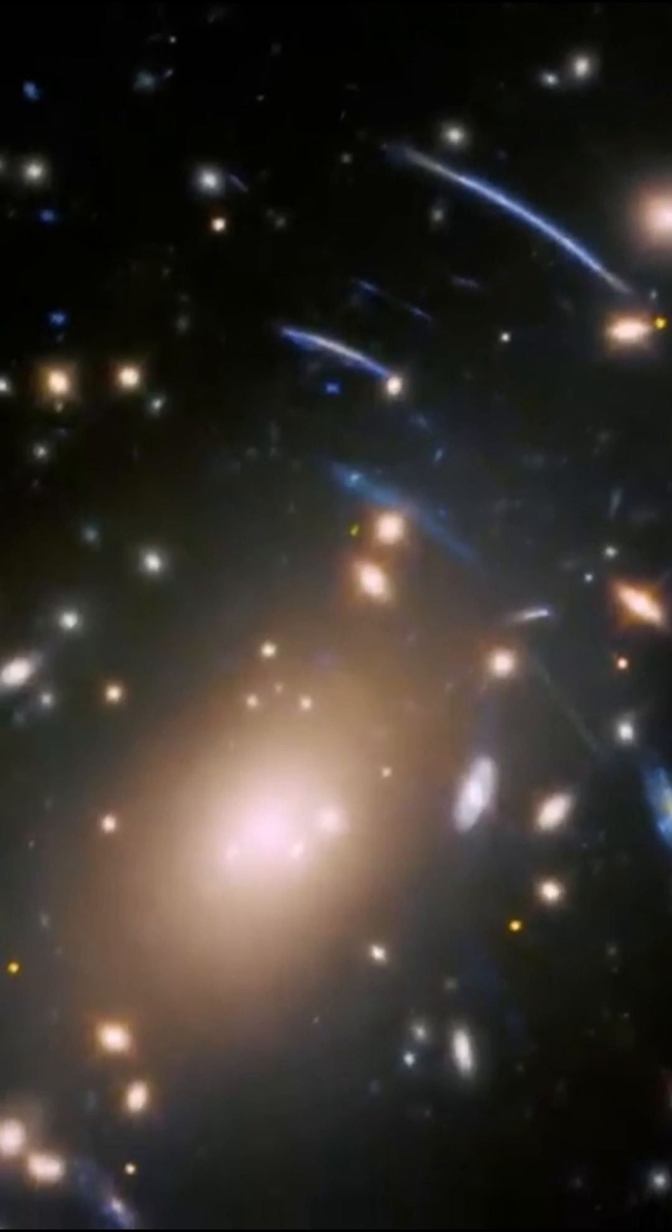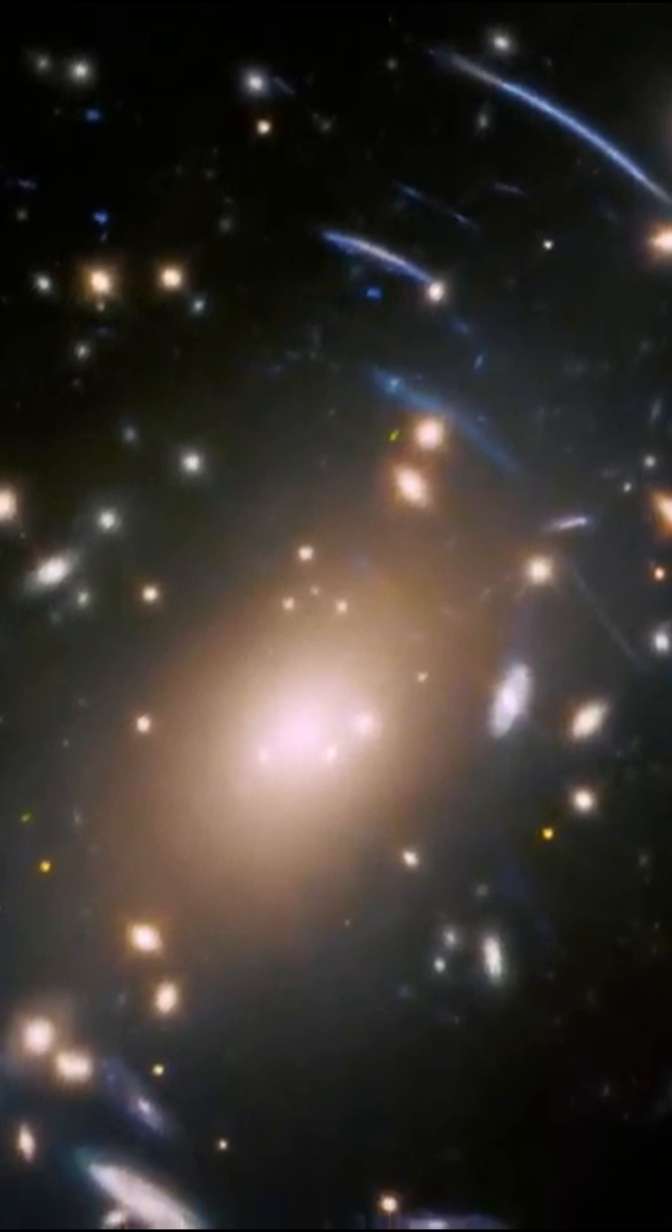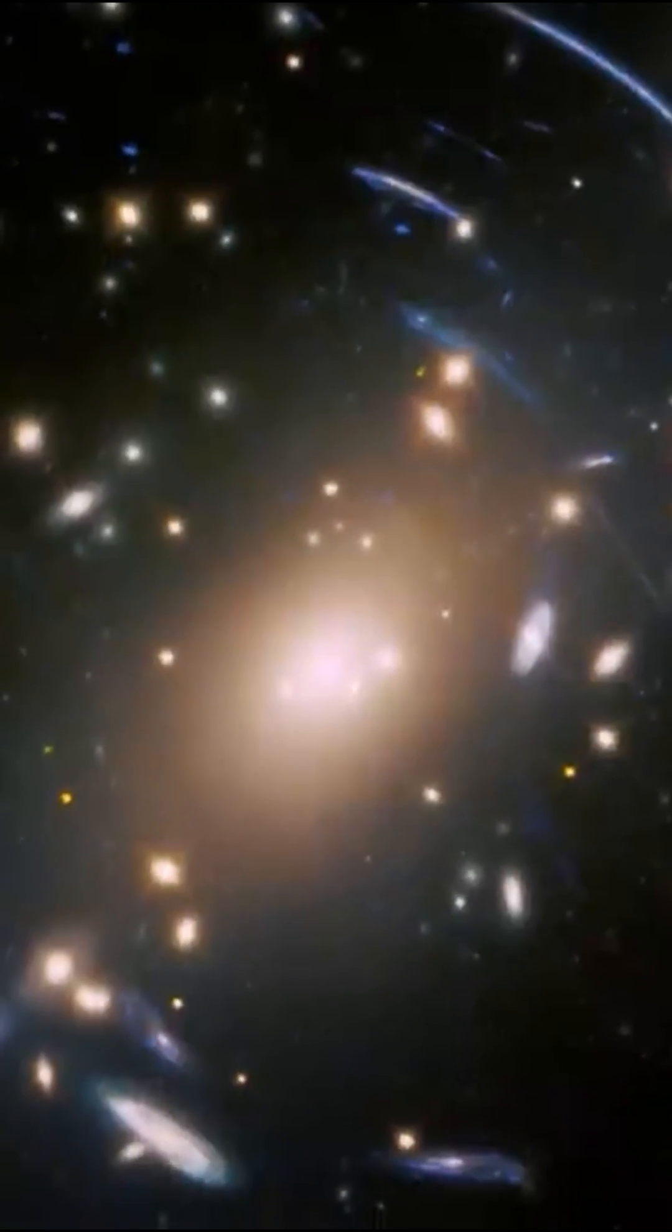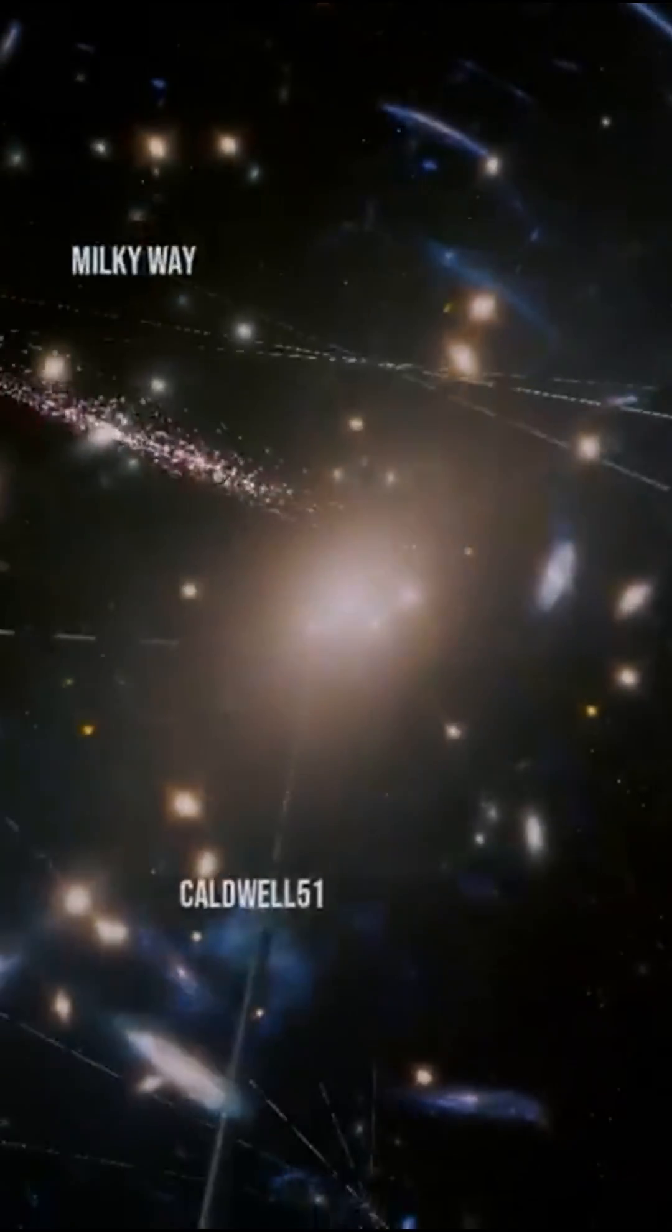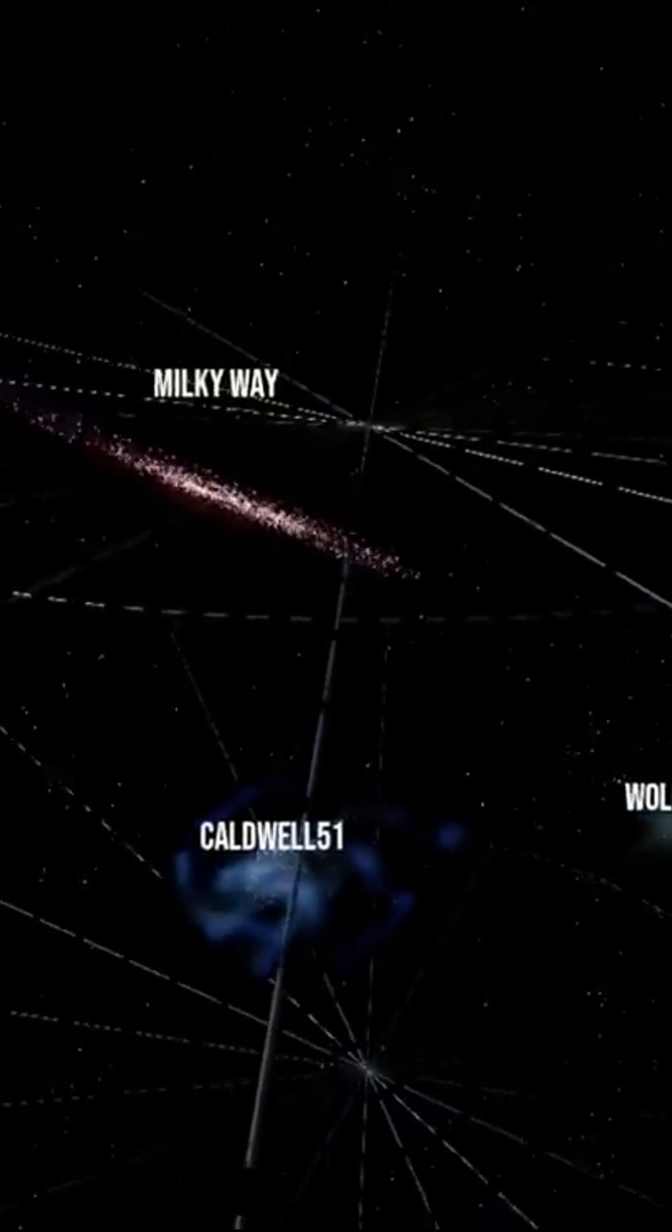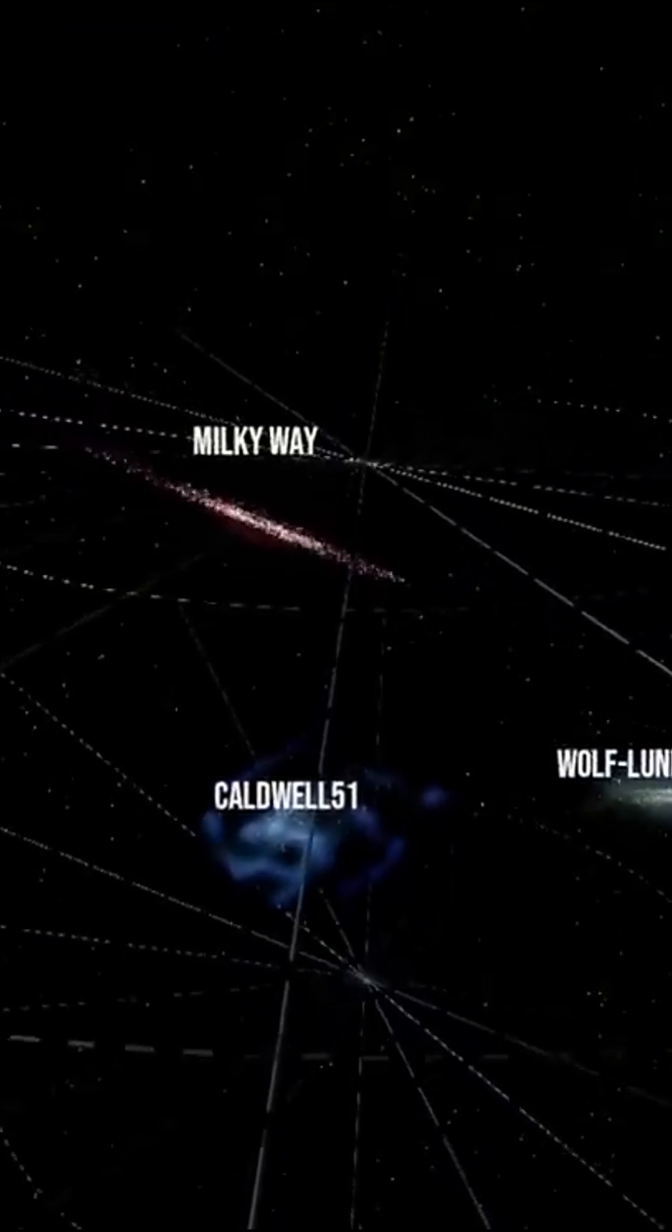Astronomers have been able to identify groups of galaxies such as the local group, to which the Milky Way belongs. The local group itself is part of the Virgo supercluster.